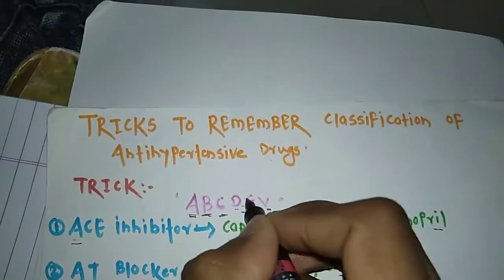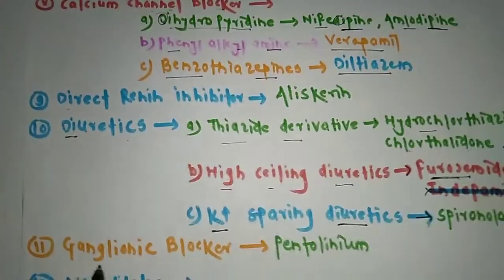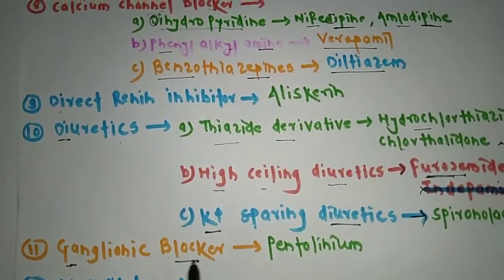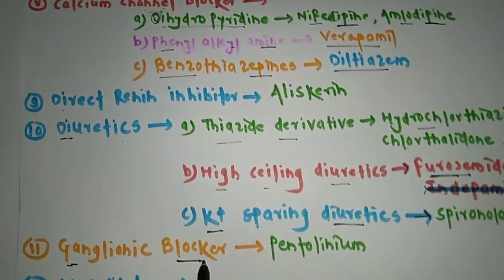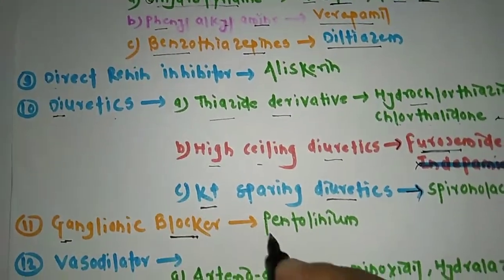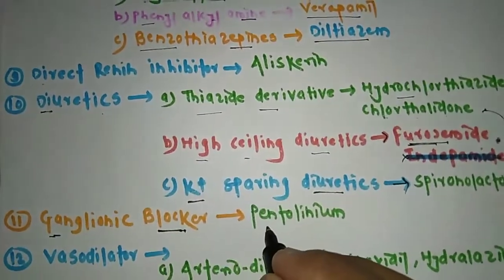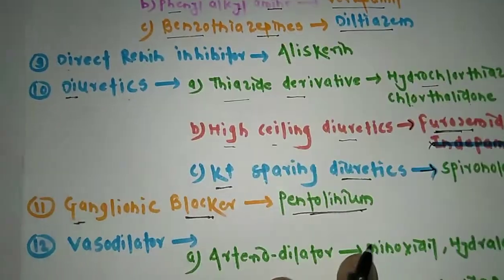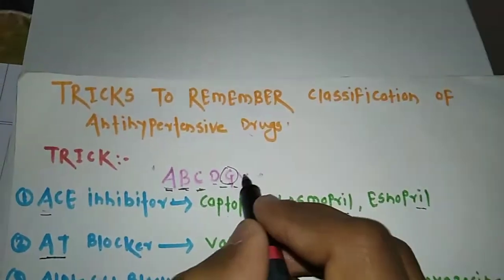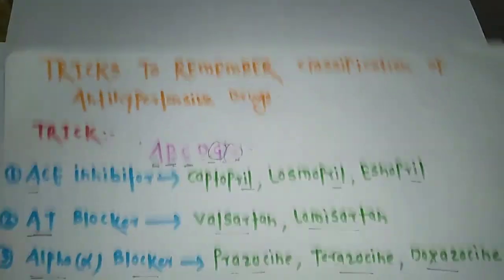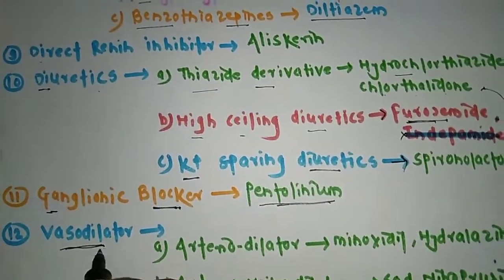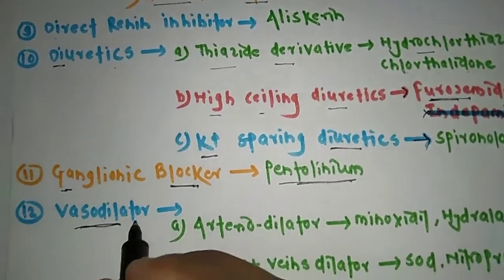Moving to G — G stands for Ganglionic blocker. There are many ganglionic blockers, but the main example used as an anti-hypertensive is pentolinium. This completes G.